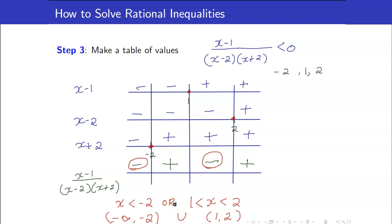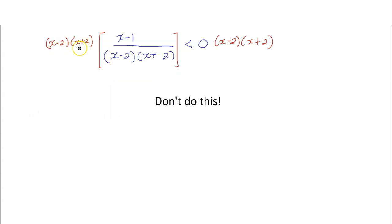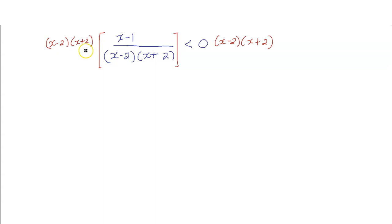It is very important to remember that whenever you have rational inequalities, you cannot multiply both sides by the LCD. Why is it wrong? Because you do not know the value of x minus 2 times x plus 2. For an inequality, the sign flips if the quantity you are multiplying is negative, and since it includes a variable, you cannot determine whether it's positive or negative. You can only multiply both sides by a constant.